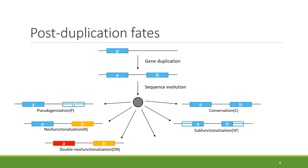In the sub-functionalization fate, both of the duplicated genes share the function of the original gene — in other words, the duplicated genes together perform the same function as the original gene. And in specialization, both duplicated genes together perform the same function as the original gene, and also they find new functions.